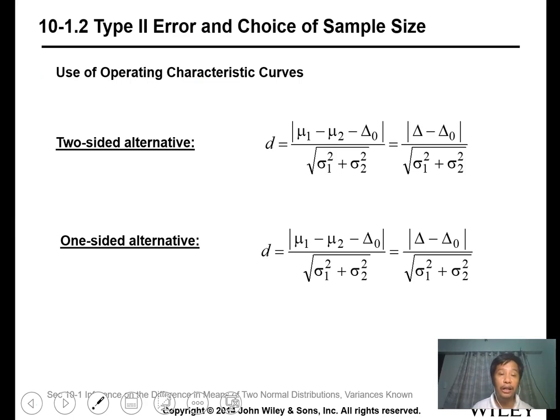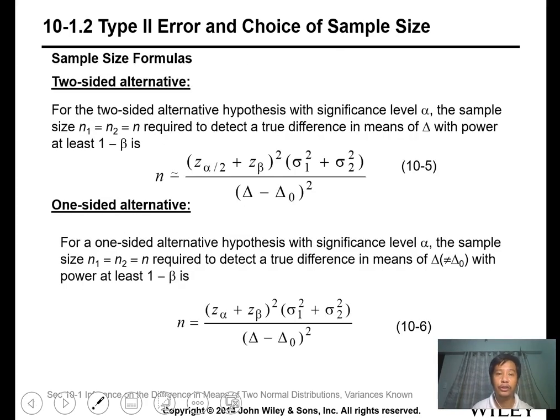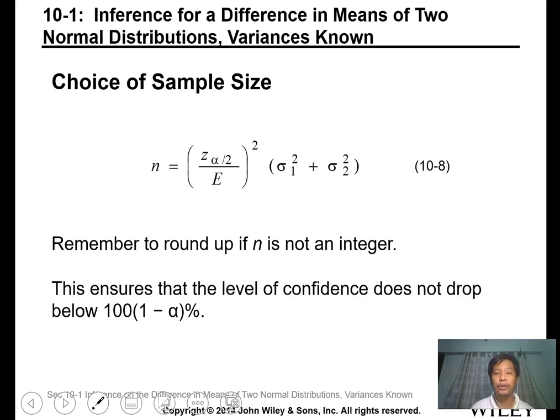You can do two-sided alternative and one-sided alternative to calculate the difference for type 2 error. For two-sided tests, this is how you compute the sample size. For single-sided tests, this is the computation - same as for single sample sets, the difference is what you're calculating. For choosing sample size, you can have this simplified calculation where the inference is for difference in means of two normal distributions with known variance. Remember to round up if n is not an integer to ensure that the level of confidence does not drop below 100 times (1 minus α) percent.